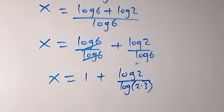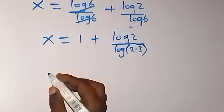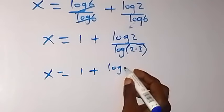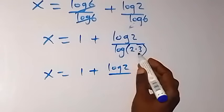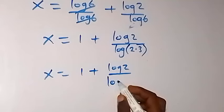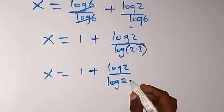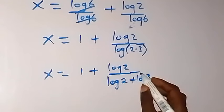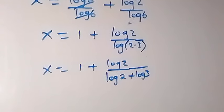This becomes x equals 1 plus log 2 over the sum of two logs, which is log 2 plus log 3.